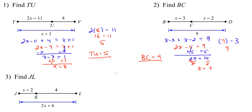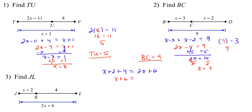Looking at example 3, they want us to find the length of JL, the entire line segment. The equation is still the same: JK is x plus 2, plus KL which is 4, equals JL which is 2x plus 6. Combining like terms, 2 plus 4 is 6, so we have x plus 6 equals 2x plus 6.